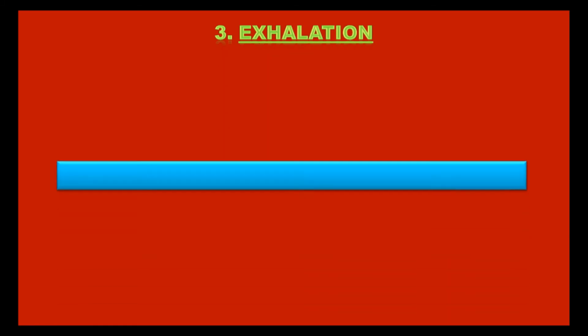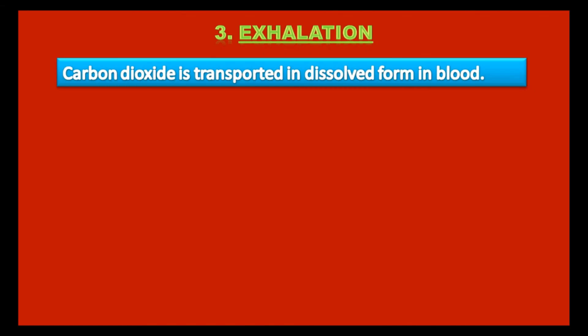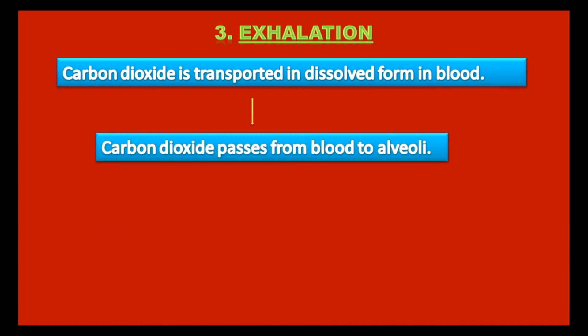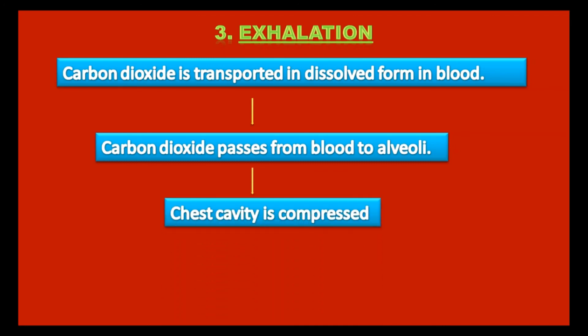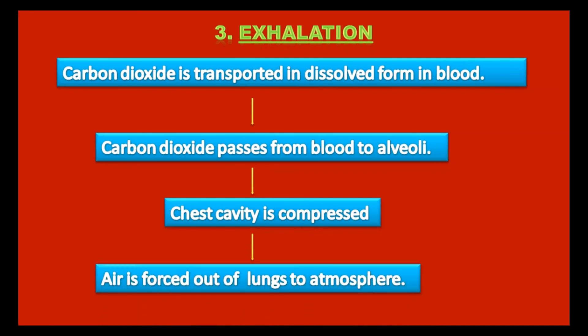The third step is Exhalation. It is the process of giving out carbon dioxide from the lungs to the atmosphere. It occurs as carbon dioxide is transported in dissolved form in blood. From blood, carbon dioxide passes to the surface of the alveoli. The chest cavity is compressed due to relaxation of ribs and diaphragm. Air is then forced out of the lungs to the atmosphere.